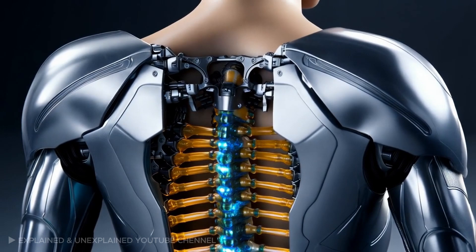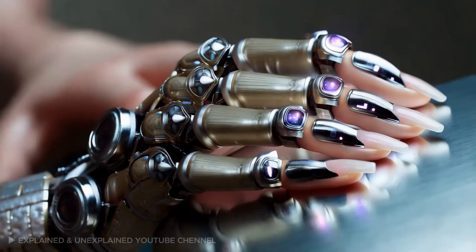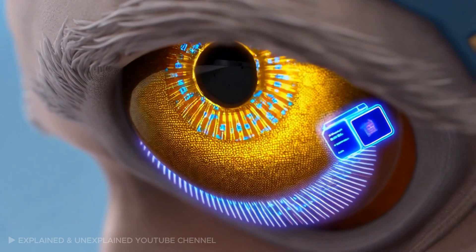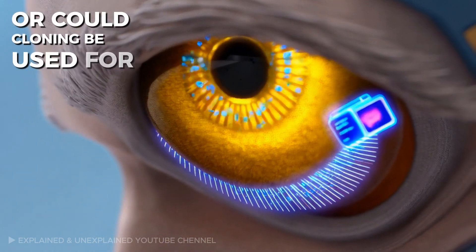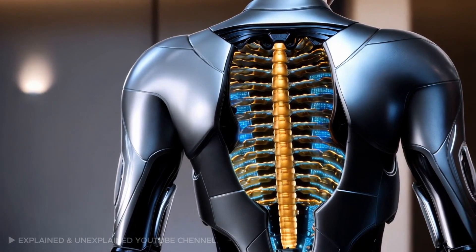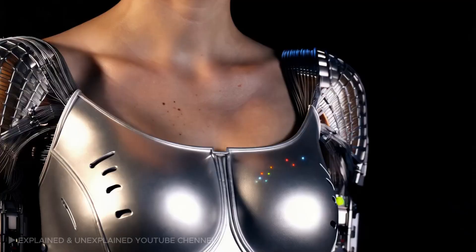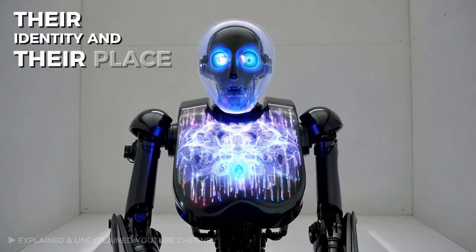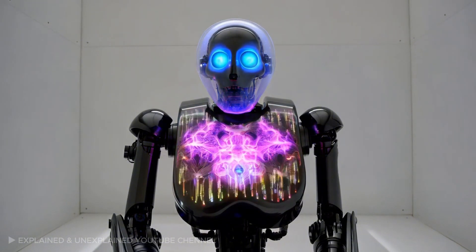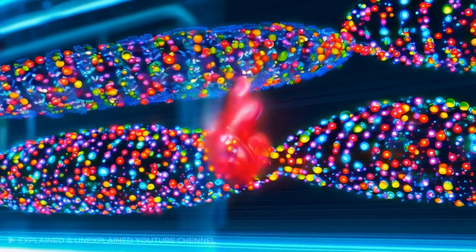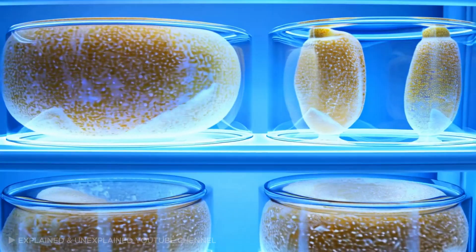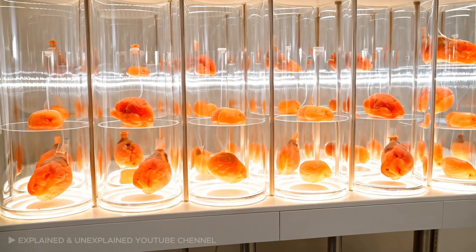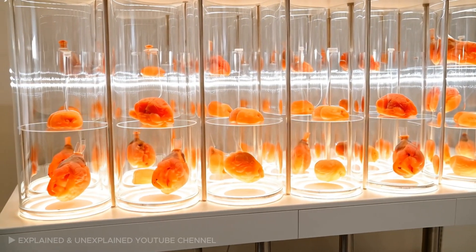As cloning technology advances and the possibility of human cloning becomes a reality, one major question arises: who decides who gets cloned? Would clones be created for medical purposes, such as organ harvesting? Or could cloning be used for personal reasons, like creating a perfect version of someone? If human cloning becomes feasible, the very nature of human existence will be challenged. Clones could face a lifetime of questions about their origins, their identity, and their place in society. In a world where human cloning is common, how would society view cloned individuals? Would they be recognized as full citizens, with the same rights as everyone else? Or would they be seen as subhuman, lesser beings created solely for specific purposes? This could lead to profound changes in how we define humanity and the value we place on human life.